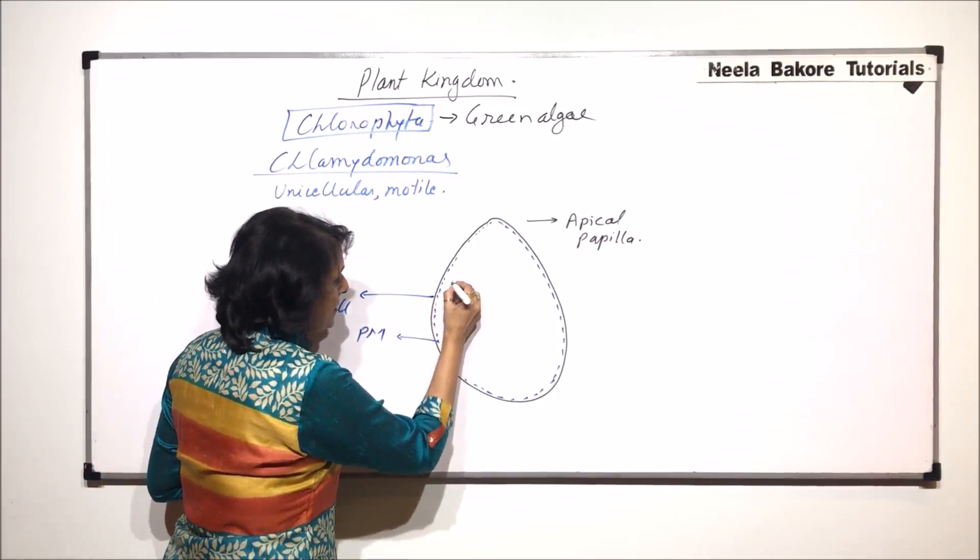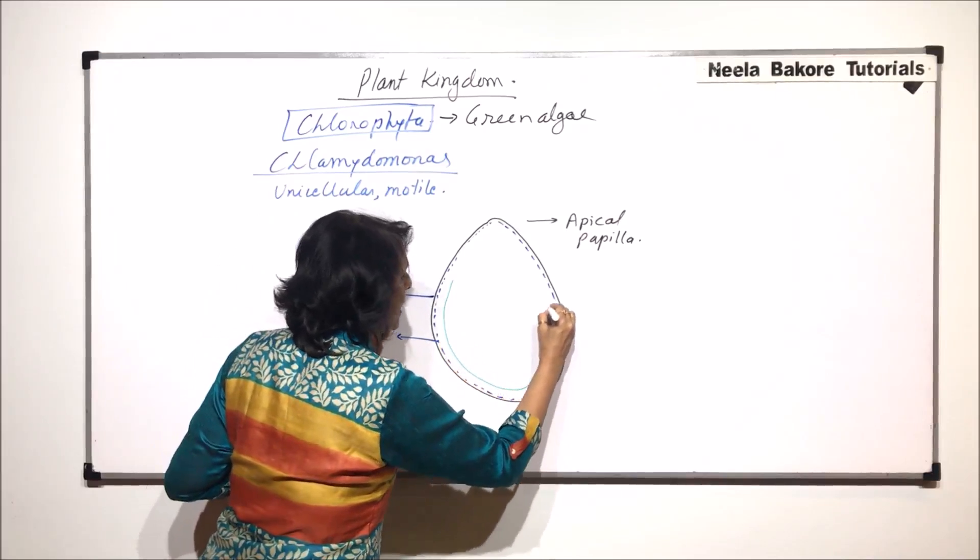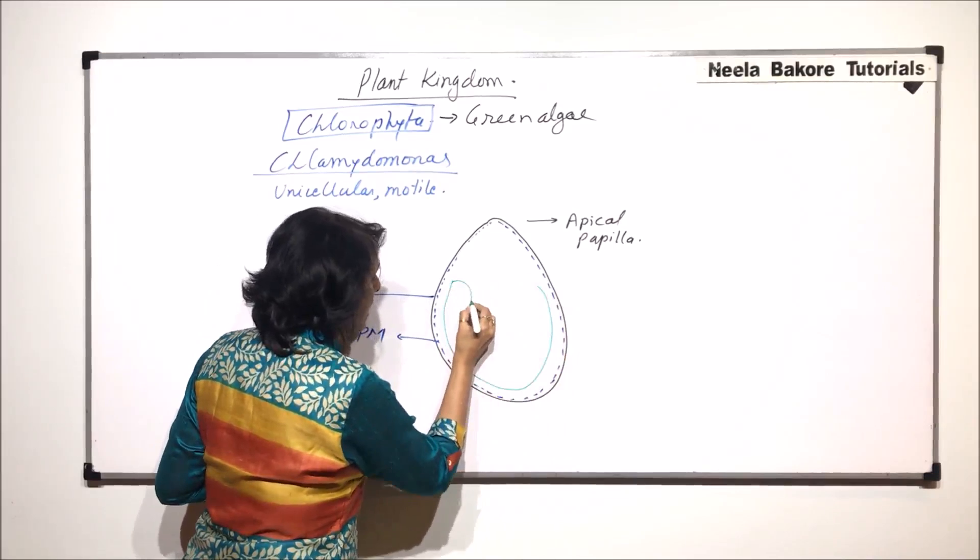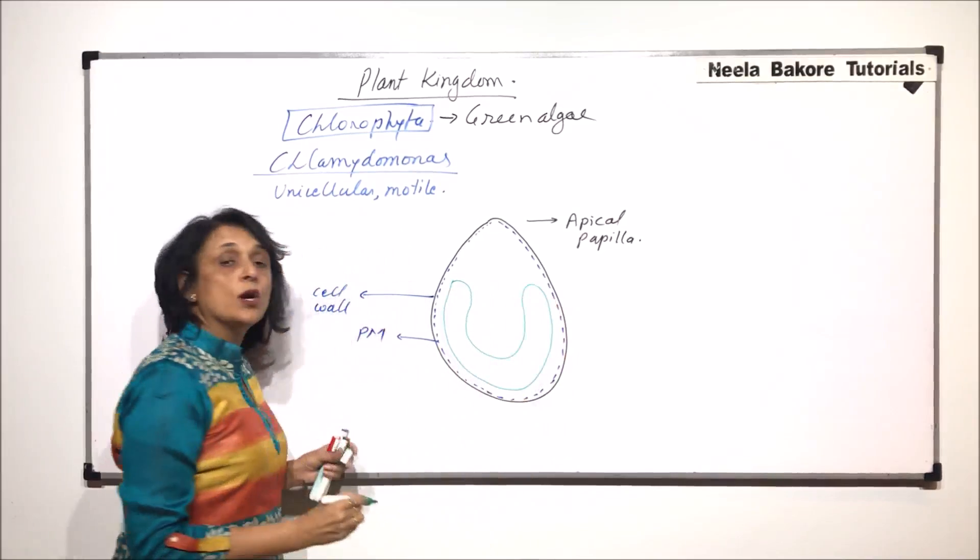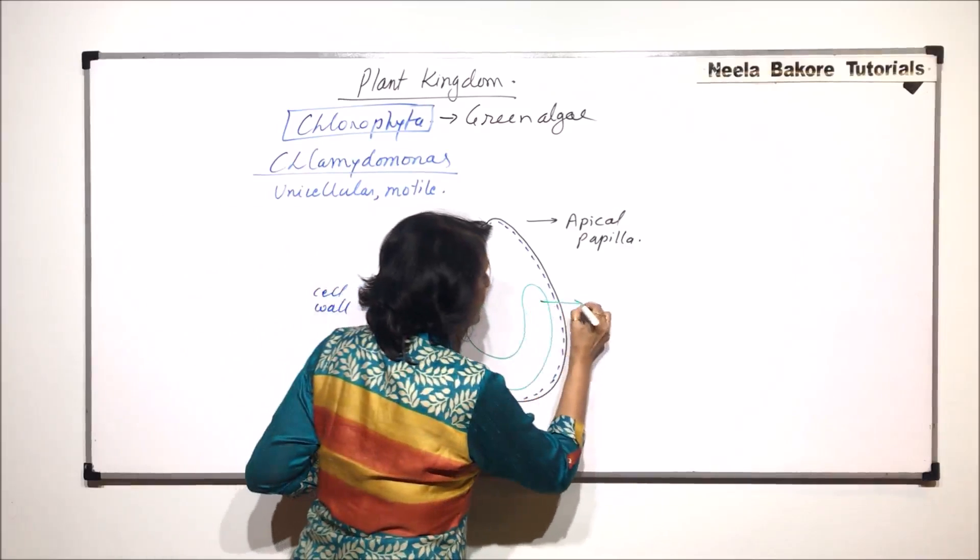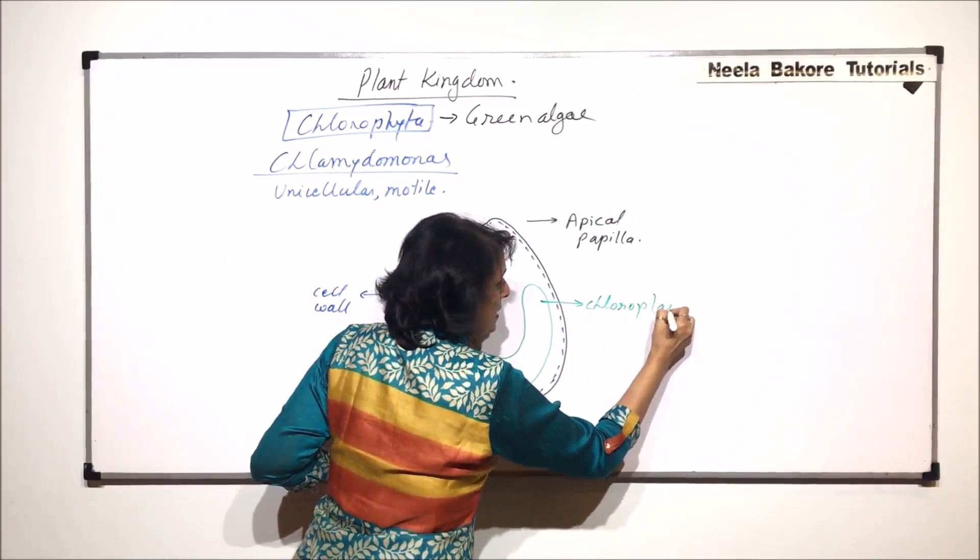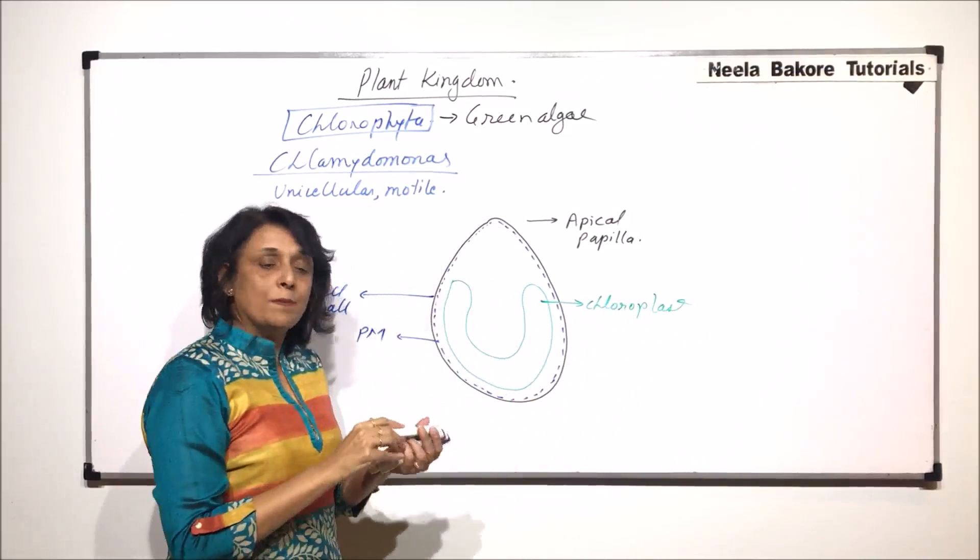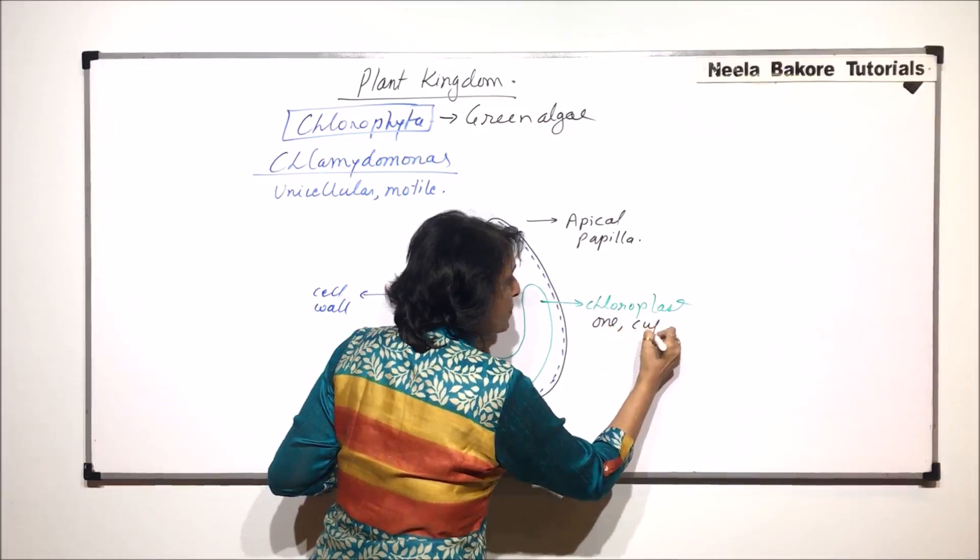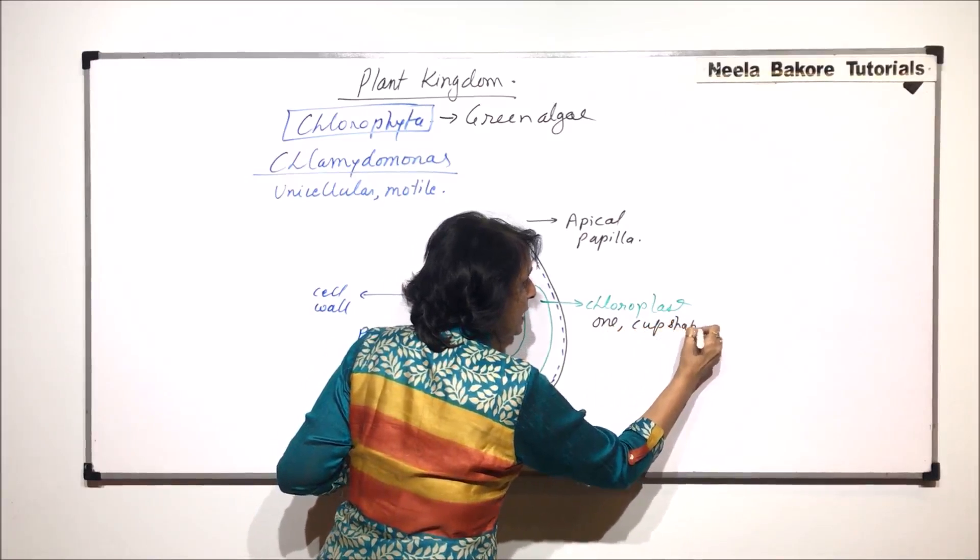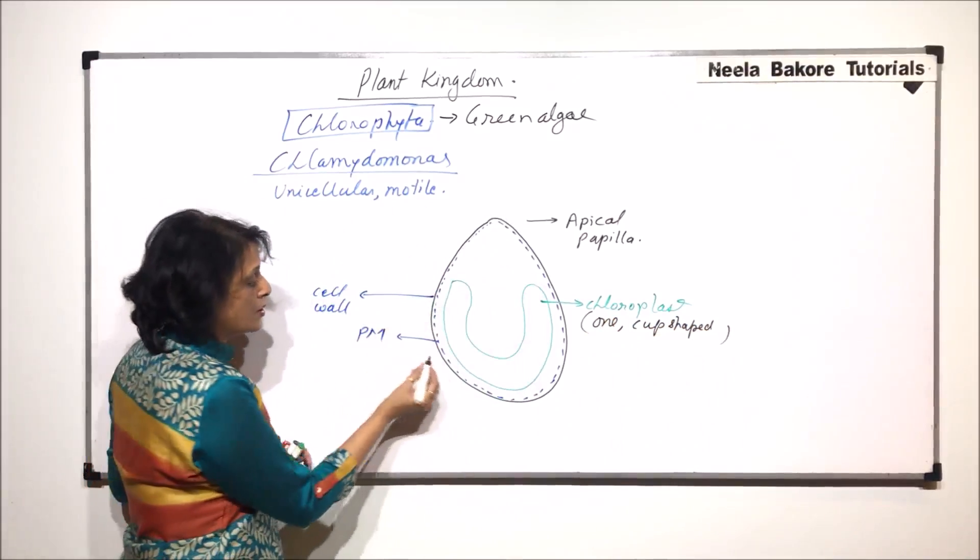In the central cytoplasm we find a large cup shaped or sometimes horse shoe shaped chloroplast. This is single. In case of Chlamidomonas there is one cup shaped chloroplast and it is very large which occupies most of the position.